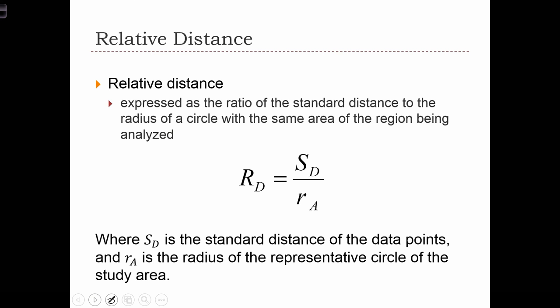The relative distance statistic can. In this statistic, we are simply controlling for the size of the study area by dividing the standard distance by the radius of a circle that would have the same area as the study area.